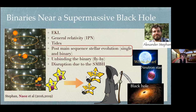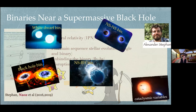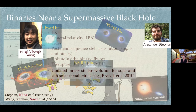We found binary systems of black holes, neutron star–black holes, white dwarfs, and a lot of cataclysmic variables. I want to highlight the work from an undergrad, Cheryl Wang, who included updated stellar evolution at solar and sub-solar metallicities.